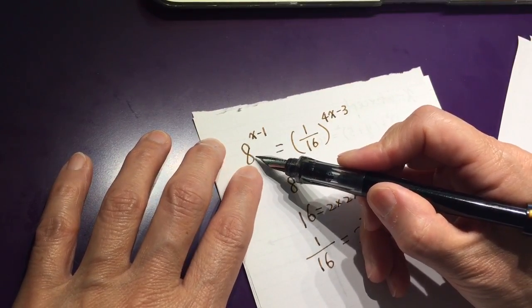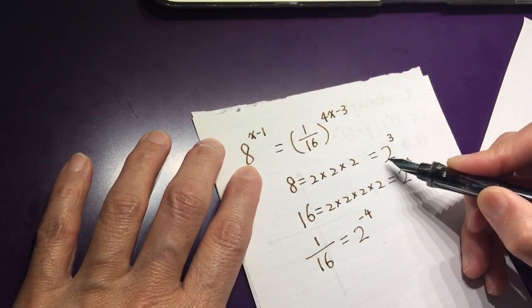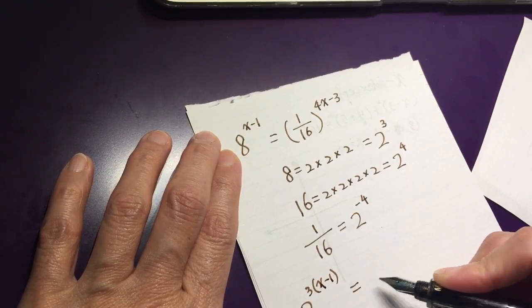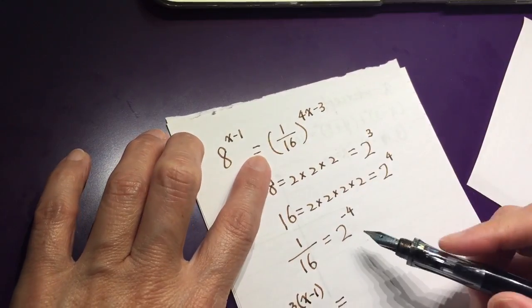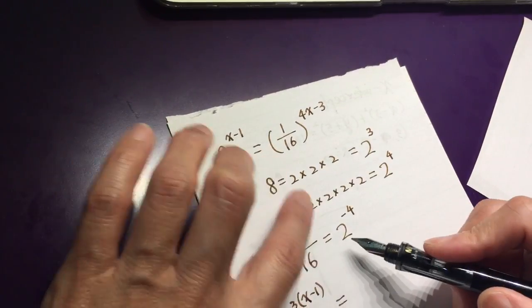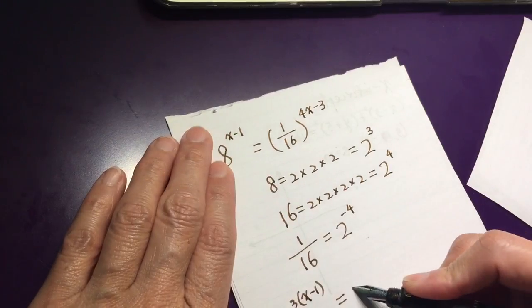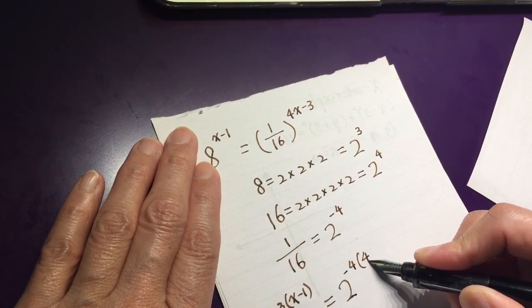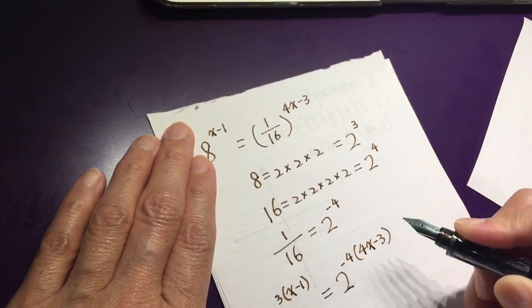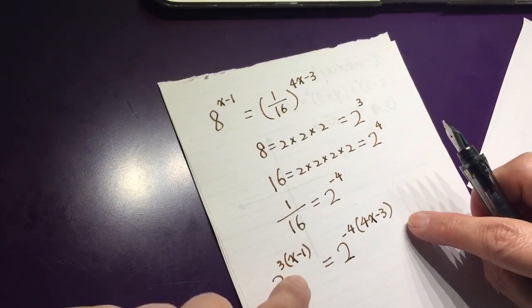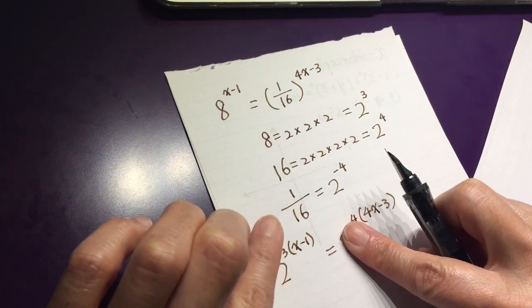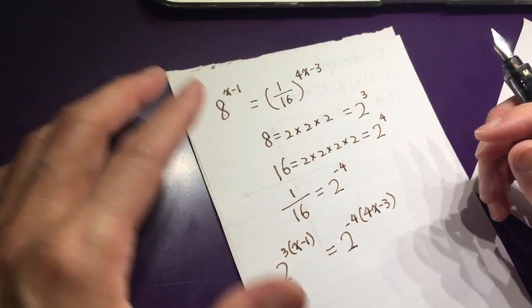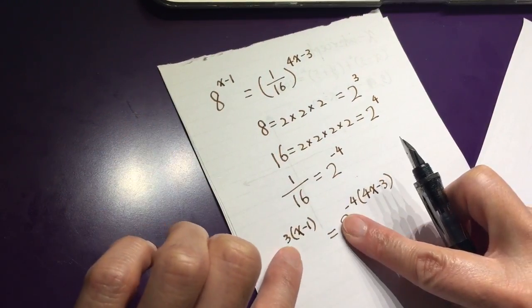And 1 over 16 equals 2 to the power of negative 4. Now we can do 2. Instead of writing 8, we write down 2 to the power of 3 times x minus 1 equals 1 over 16. We do not write 1 over 16. We wrote 2 to the power of negative 4 to the power of 4x minus 3. We will honestly do the change. Only replace the equality. Only change a way of writing it. It's still the same equality with the same base.